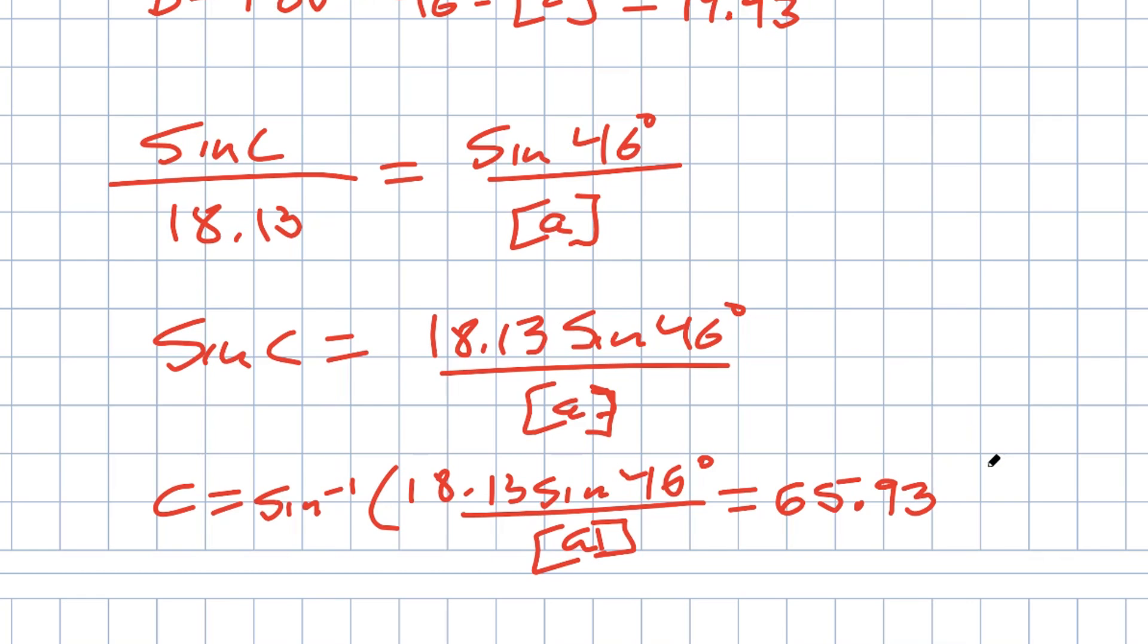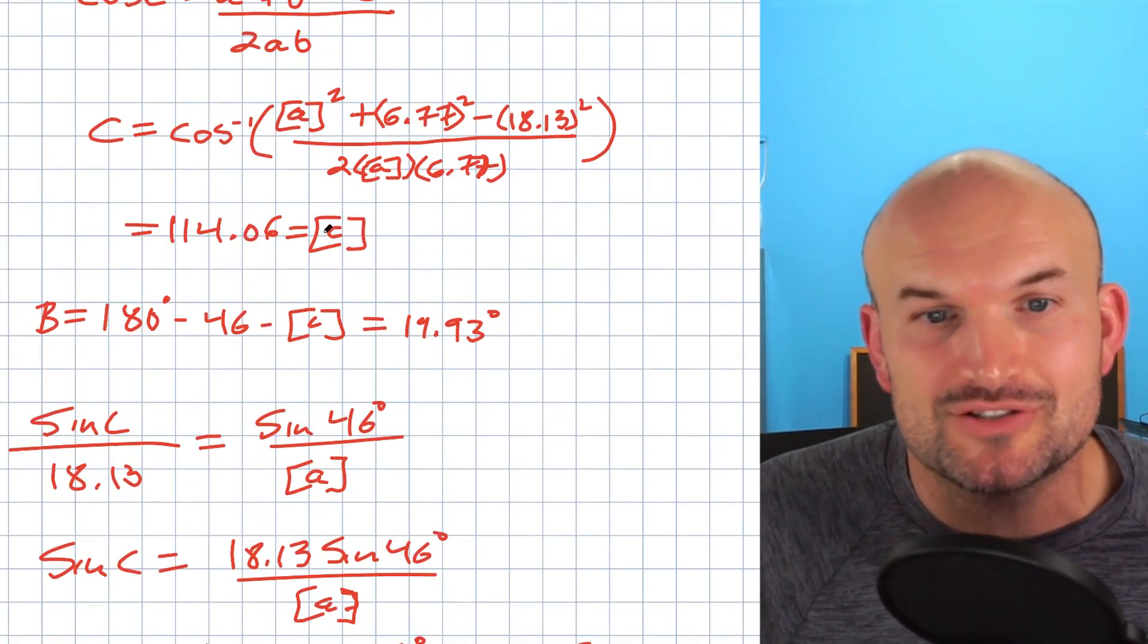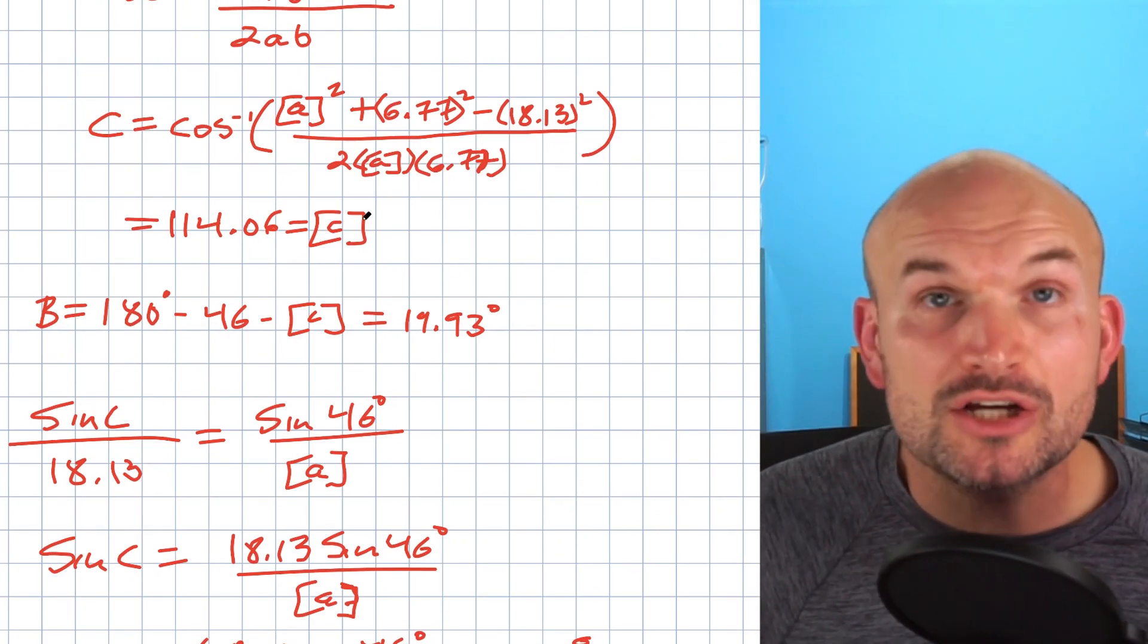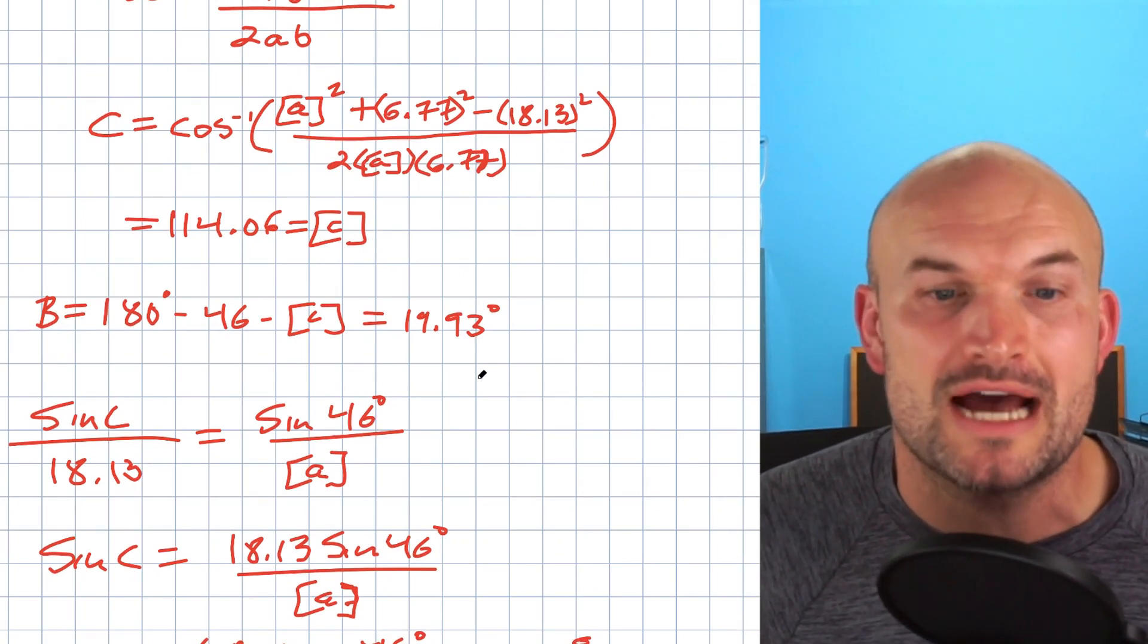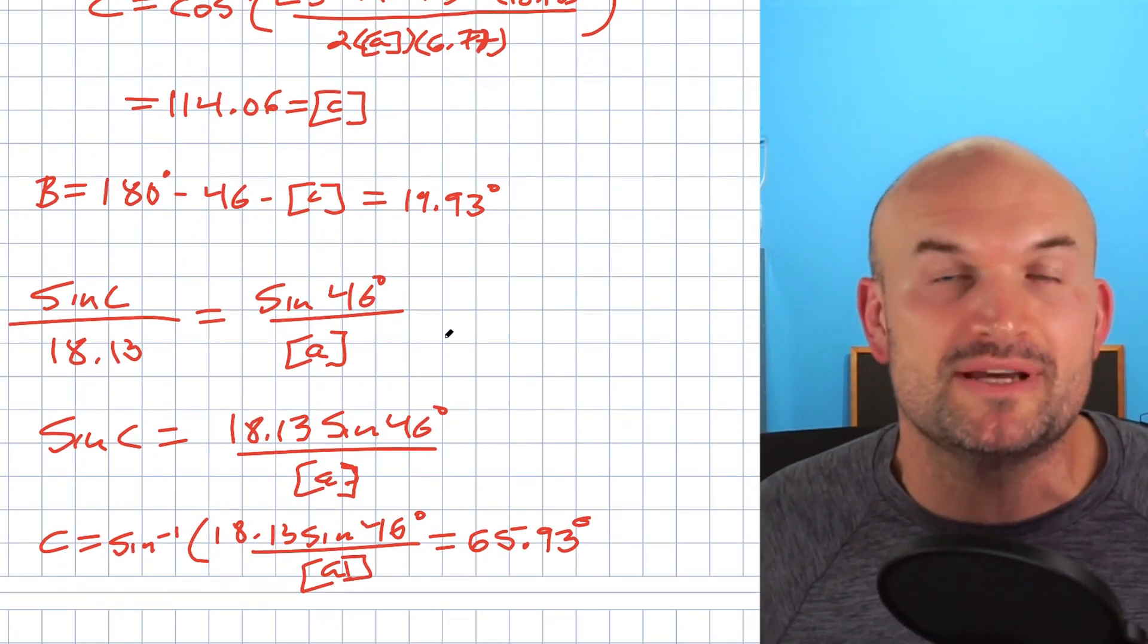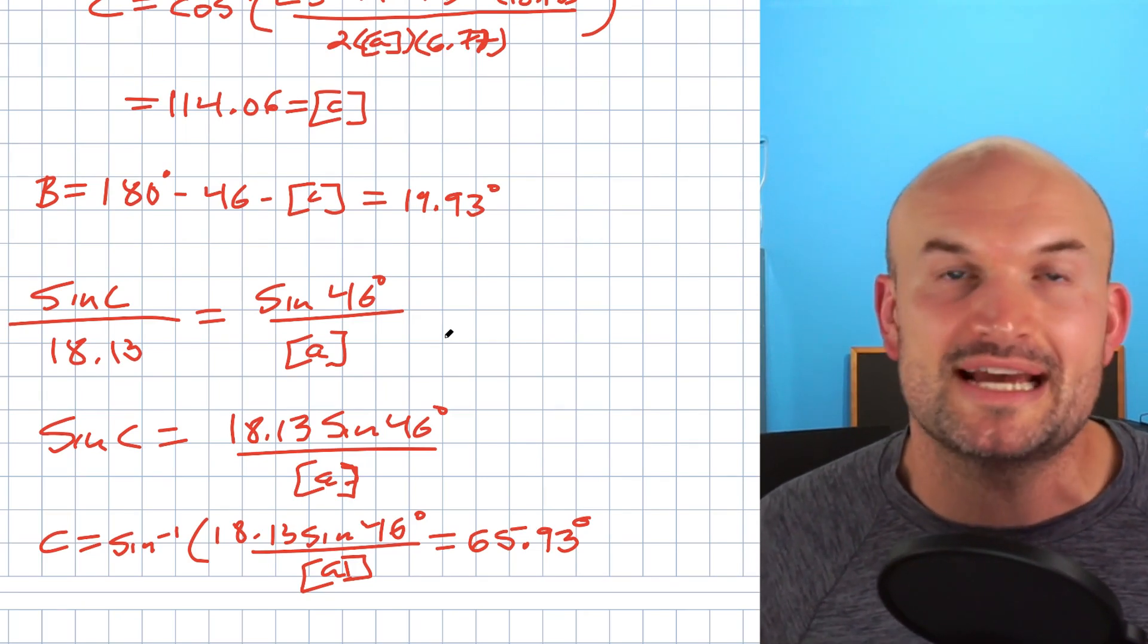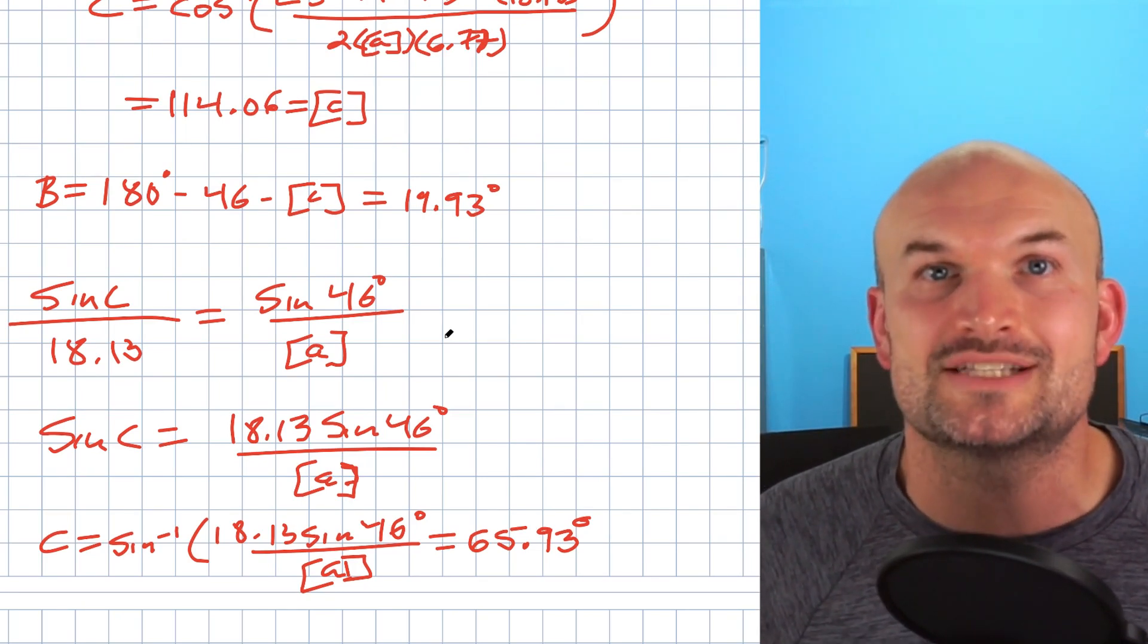And therefore we get 65.93. But notice that is not my angle C that I got over here, right? So which one is correct? Well, this one is correct. So that's why this is a mistake. The law of cosines is going to give you the correct angle every single time. The law of sines, when you have the ambiguous case, we don't know if it's going to be obtuse or if it's going to be acute. That's why we have that ambiguous case. We don't have enough information as to what it's going to be.